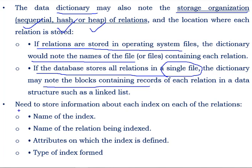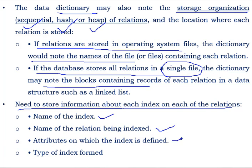Along with all this information, the data dictionary also holds index information: the name of the index, if we have applied any index to the relation; the name of the relation being indexed; and the attributes on which the index is defined, along with the type of index formed. So this is the information that the data dictionary can hold.